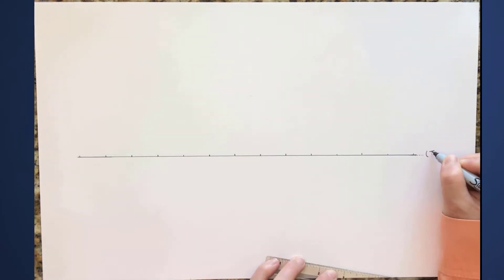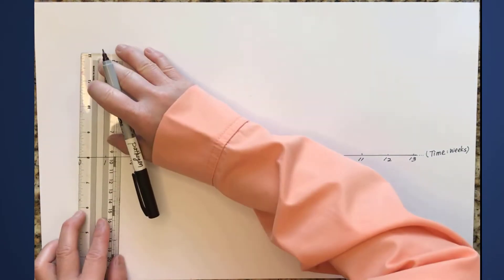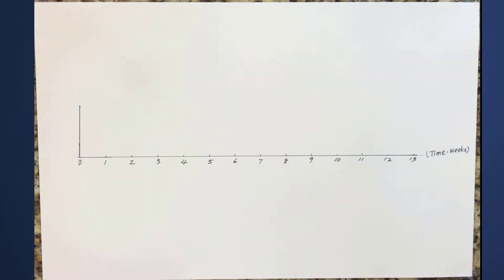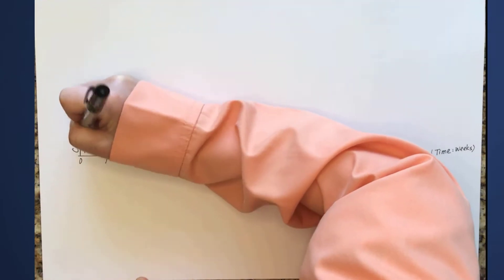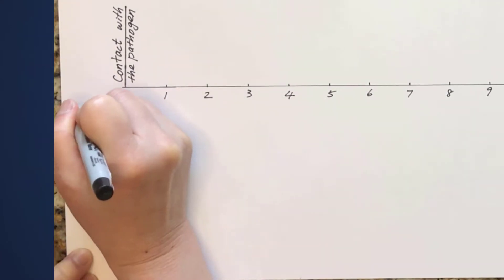This horizontal line represents time in weeks. The point zero is the time when one first made contact with the infectious pathogen. In this case, the pathogen is hepatitis A virus.